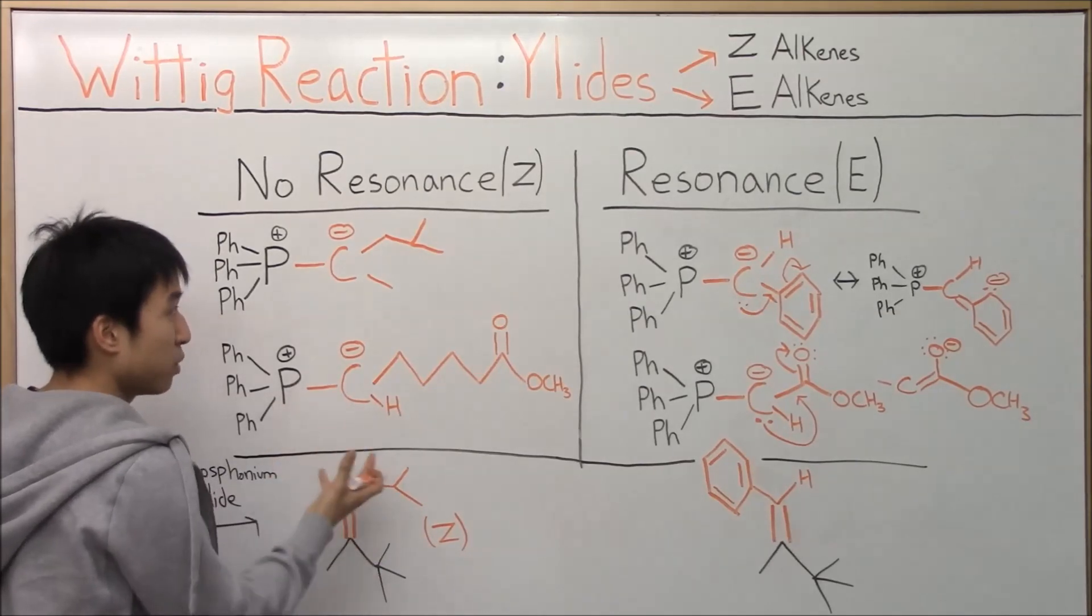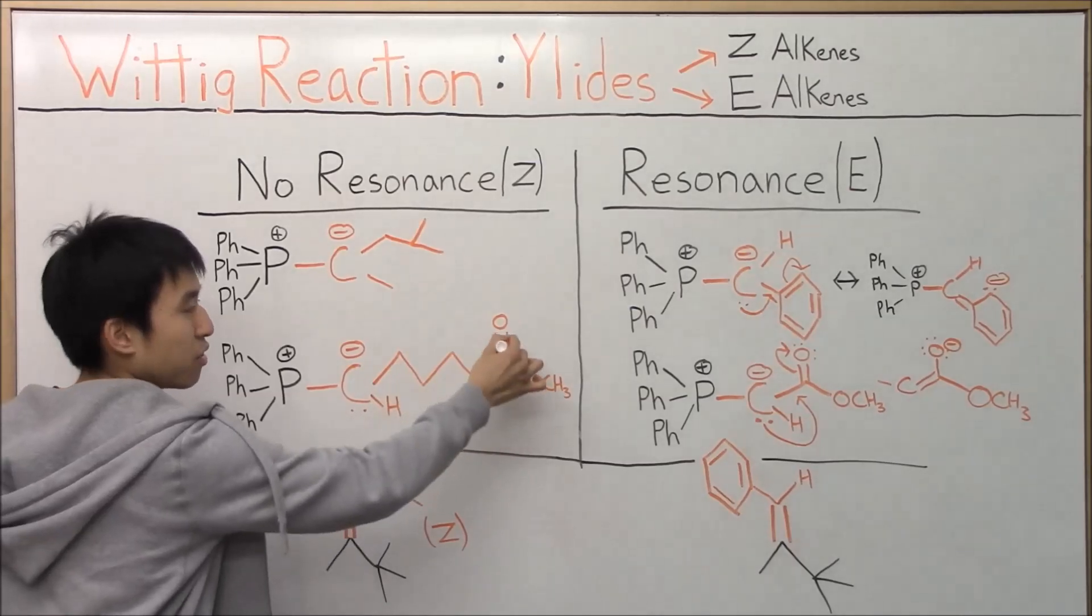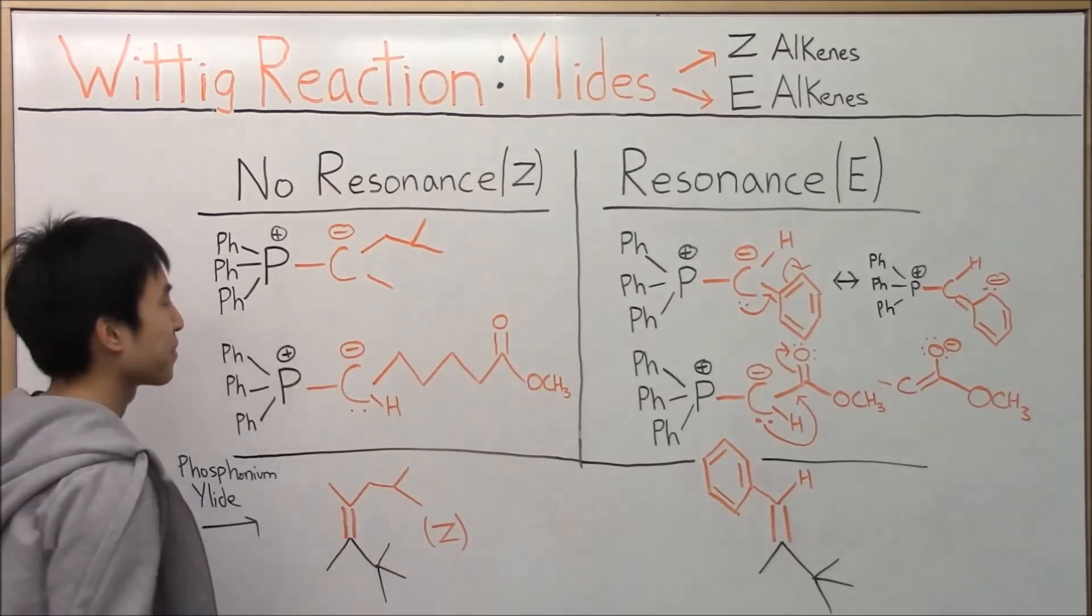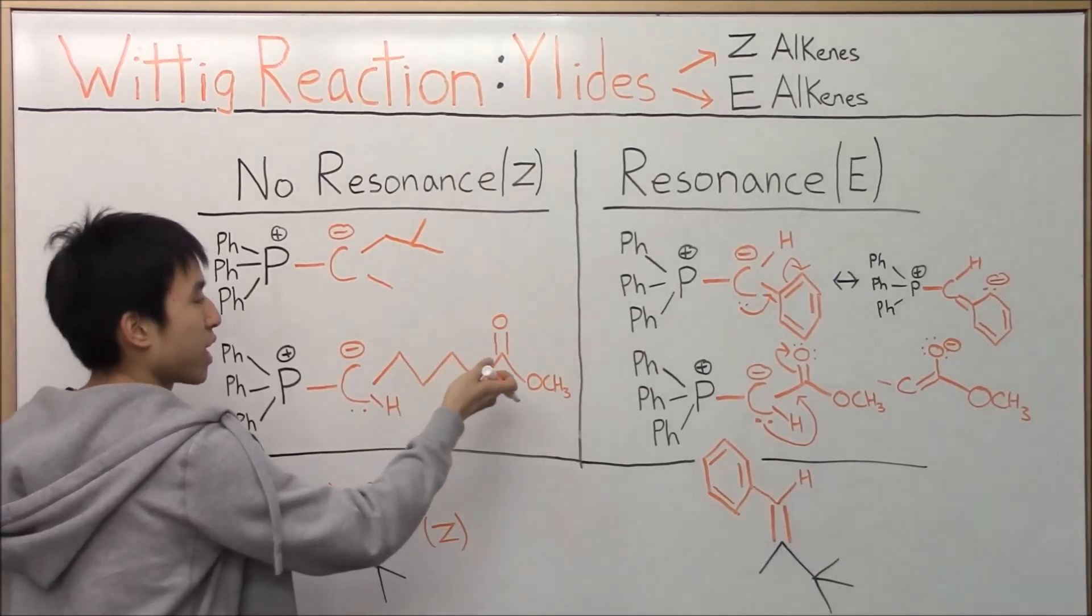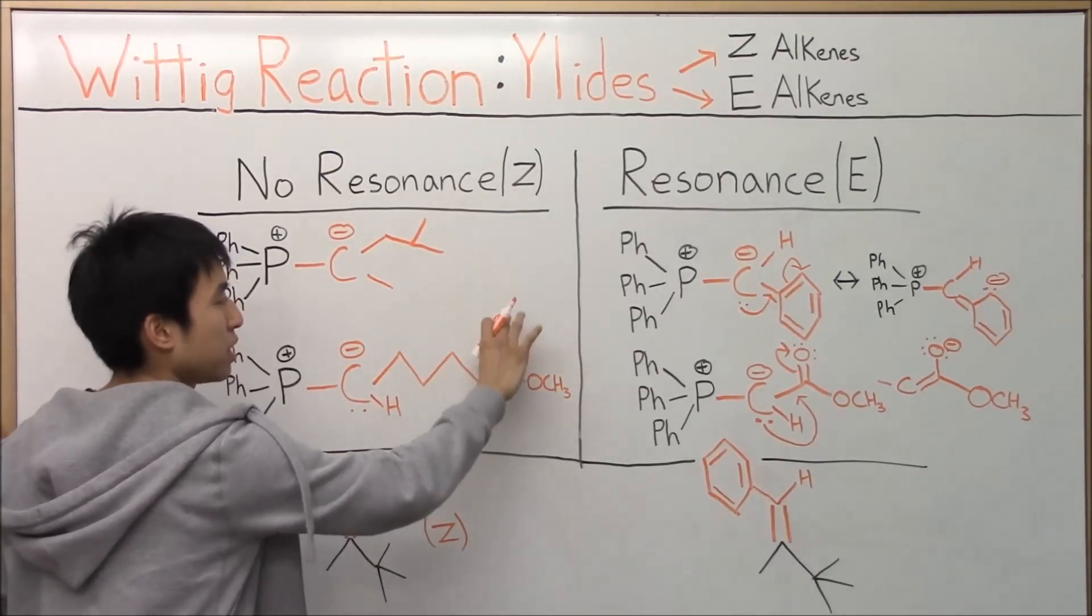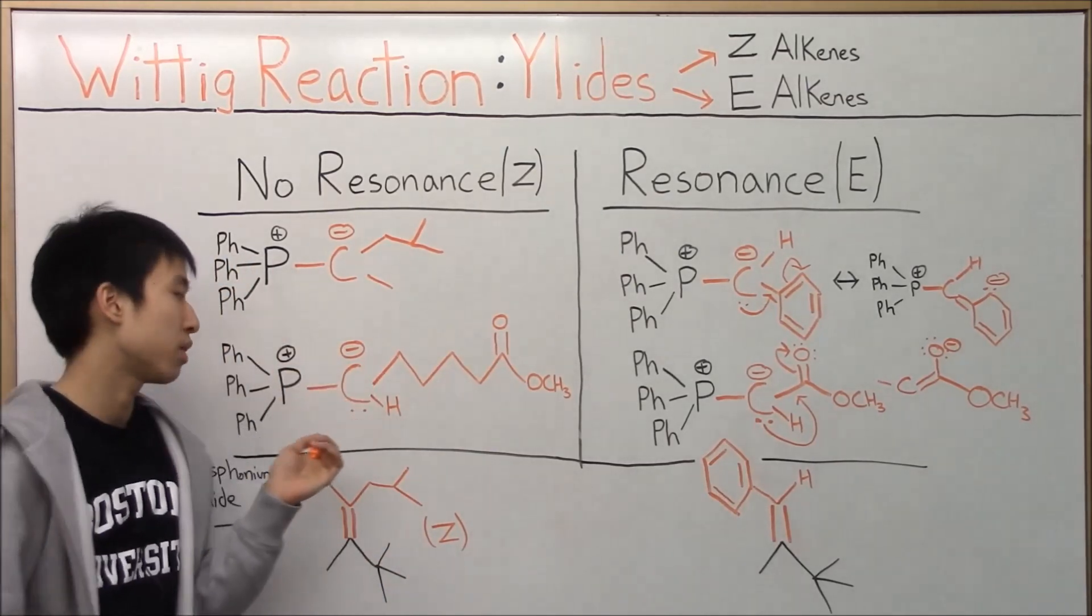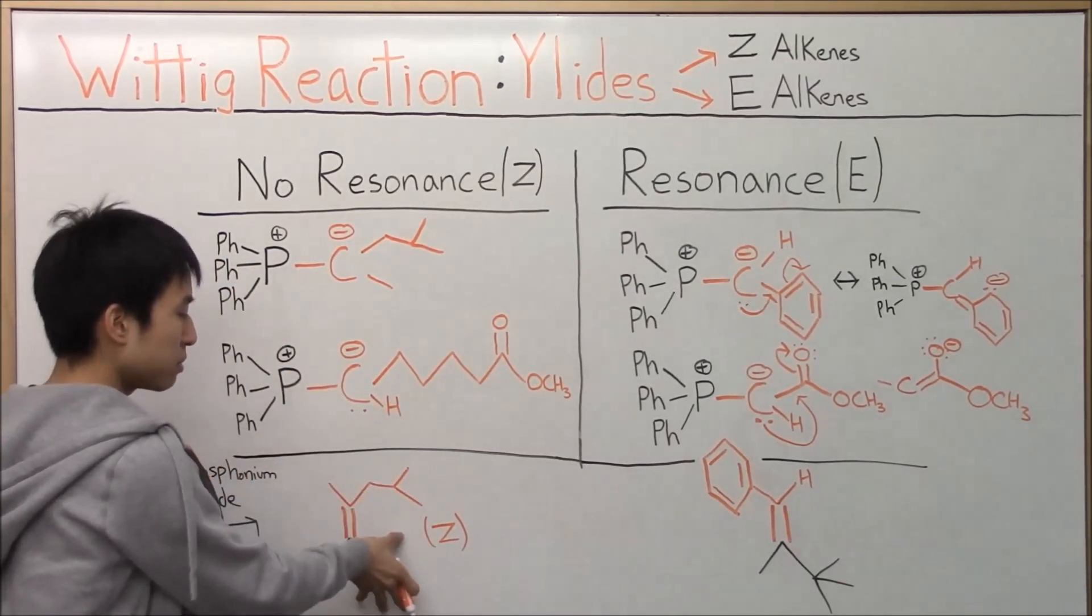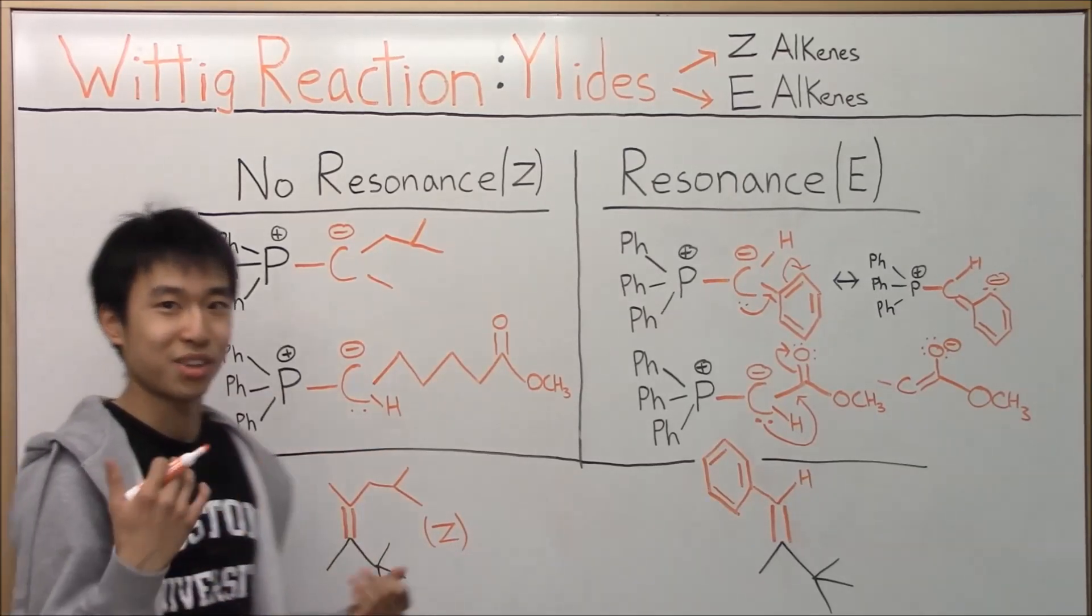And the problem with this ylid is that you have electrons here that can resonate, but they can't resonate or they can't reach it, you know? So that's why even though this structure has a reactive ester group here and a carbonyl that can resonate, it's still gonna give you a Z-alkene where the higher priority groups are on the same side and closer to each other. And this is less stable if you guys watch my other video.